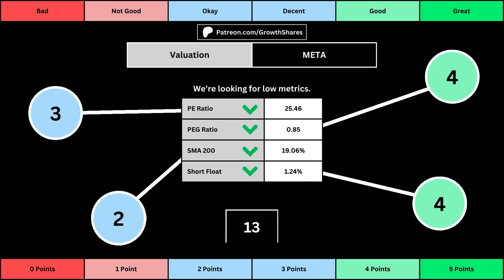This third set of metrics deals with the valuation of the company's stock based on its business. Think of the PE ratio as a measure of speculation around the stock — we want it low. The PEG ratio adds earnings growth with the PE ratio. Then, the 200-day simple moving average is the average stock price over that period, and we want that low because it means we have a cheaper stock price. Short float is basically how bearish other investors think of the stock. For these four metrics, we want the values to be as low as possible, which will give us a higher point total within the bubbles.